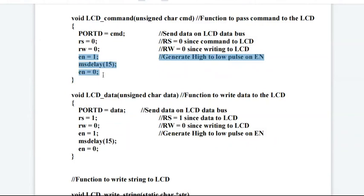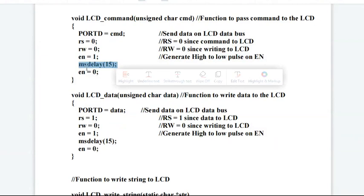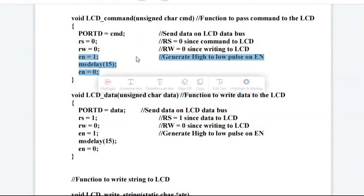To latch or to lock the information inside the LCD, on the enable pin we have to generate a high to low pulse. Here we have first made enable equals to 1, after that we have called a 15 millisecond delay, and then we made enable equals to 0. This is the way you can generate a pulse in embedded C programming. This is an important step because the function of enable is to latch the information into the LCD.